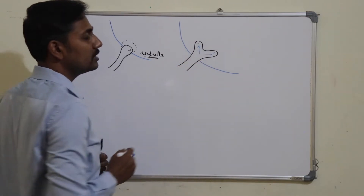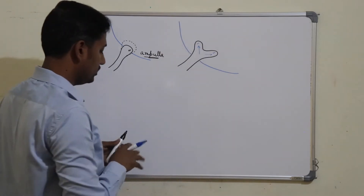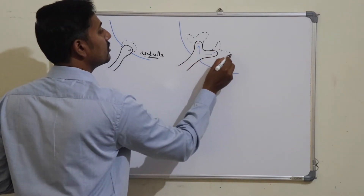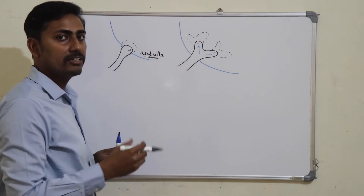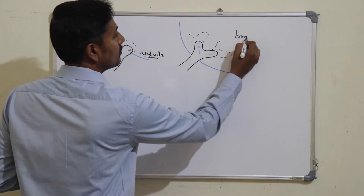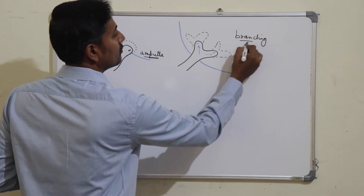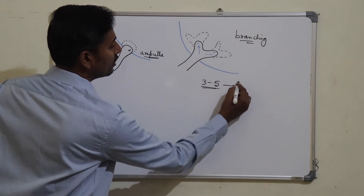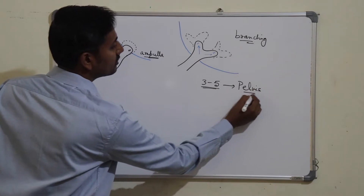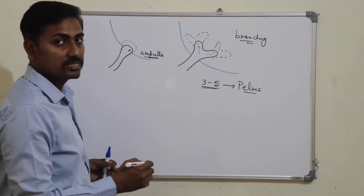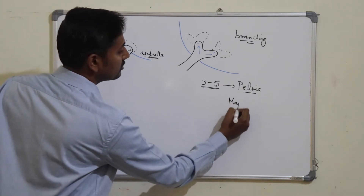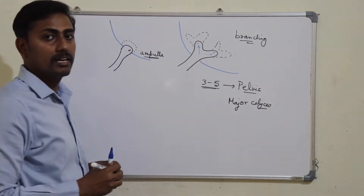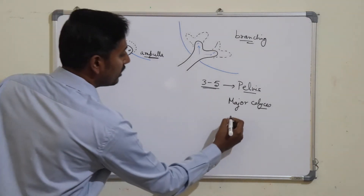There are two growing ends. These growing ends will again start branching, and there will be many generations of branching. First, three to five generations of branching fuse to form the pelvis of the ureter. Next, branches or divisions will form the major calyces, and the other divisions will form the minor calyces.